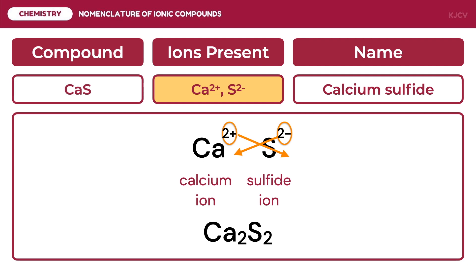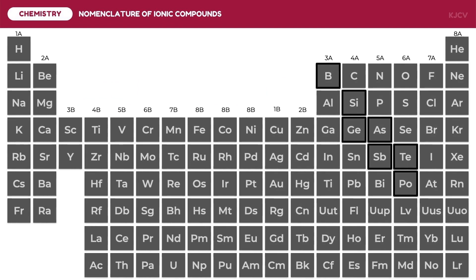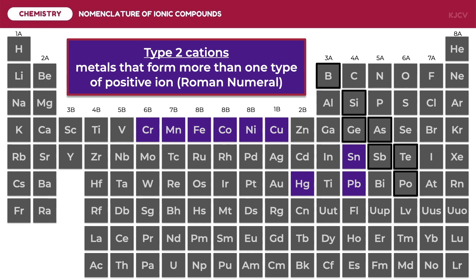Ions may not always have a single charge — some have multiple charges. These are what we call the type 2 cations: metals that form more than one type of positive ion. Highlighted in the periodic table are the common type 2 cations. The rules on naming ionic compounds with type 2 cations are the same, but we add a parenthesis after the cation indicating the Roman numeral of the charge. This is what we call the stock system of naming type 2 cations.